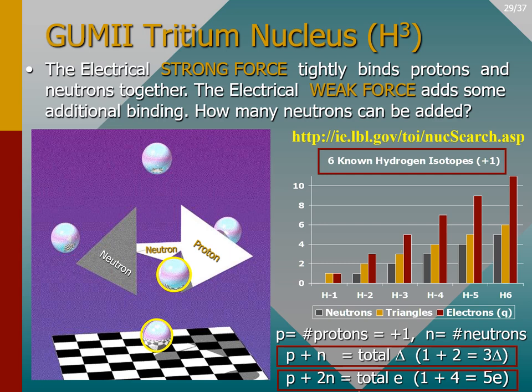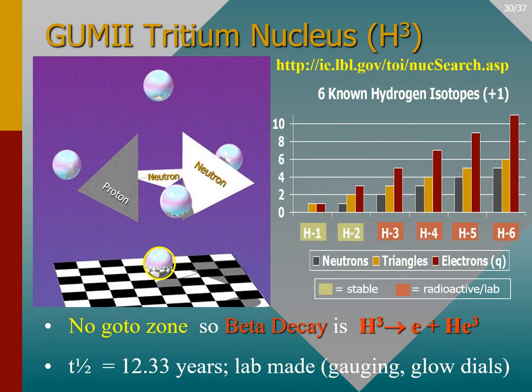The hydrogen isotope chart summarizes these calculations for all six known nuclei in terms of neutrons, triangles, and quark electrons. As one works across the chart, new pieces are added to the existing geometric model by attaching a new triangle edge to an old edge at right angles — this is how the weak force lines up best. After correctly positioning these additional pieces, the GUMMI model shows that the tritium nucleus has no go-to zone, and therefore this nucleus is unstable and will undergo neutron beta decay.